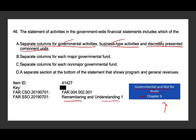Now let's look at the wrong answer choices: a separate column for each major governmental fund — not at all, we don't do that on the government-wide financial statement. A separate column for each non-major governmental fund — no, governmental funds don't appear like that on the government-wide financial statement. A separate section at the bottom showing program and general revenues — that's not what it shows. The comprehensive answer is a separate column for governmental activities, business activities, and discretely presented component units. It's something you need to know and memorize.